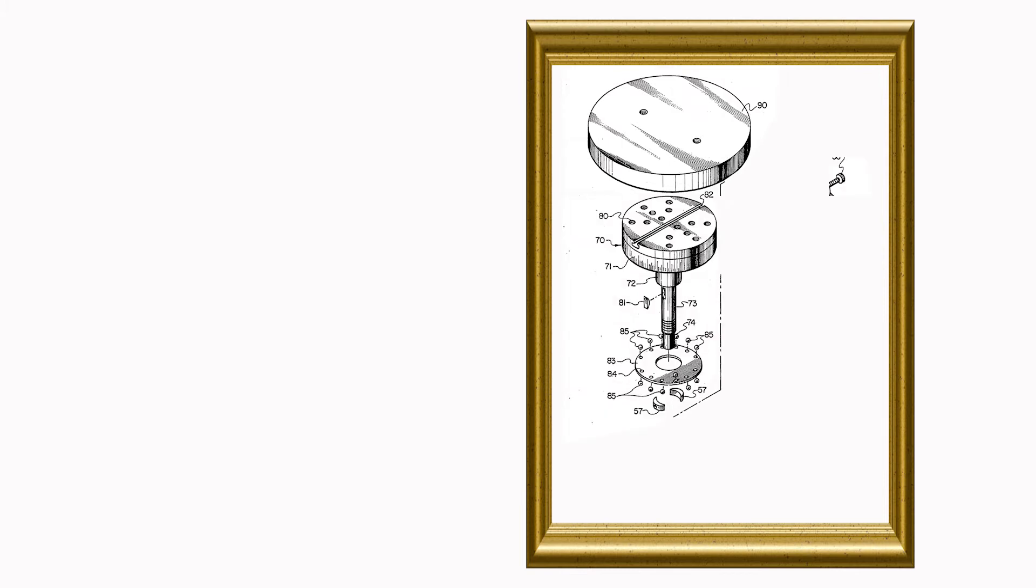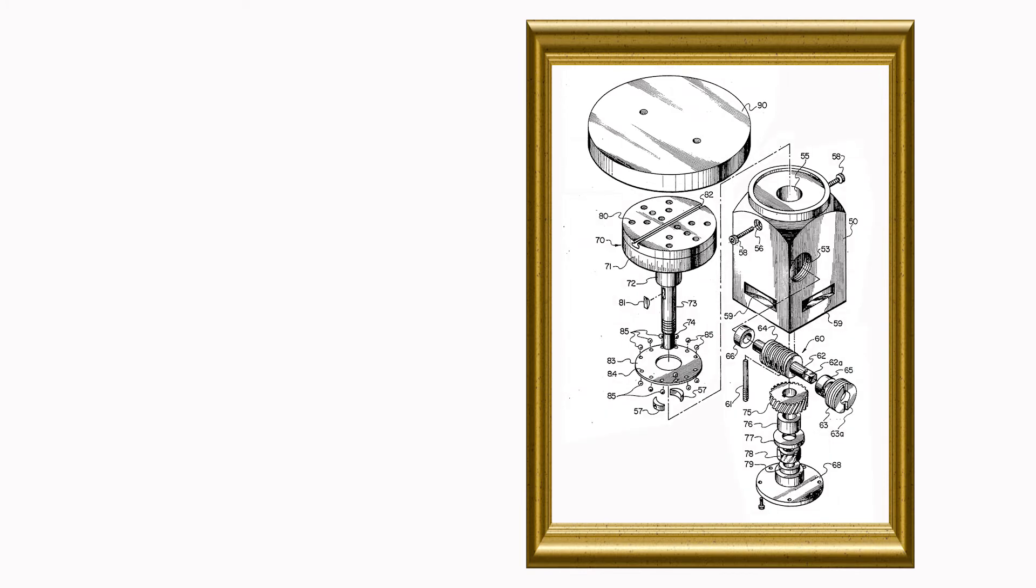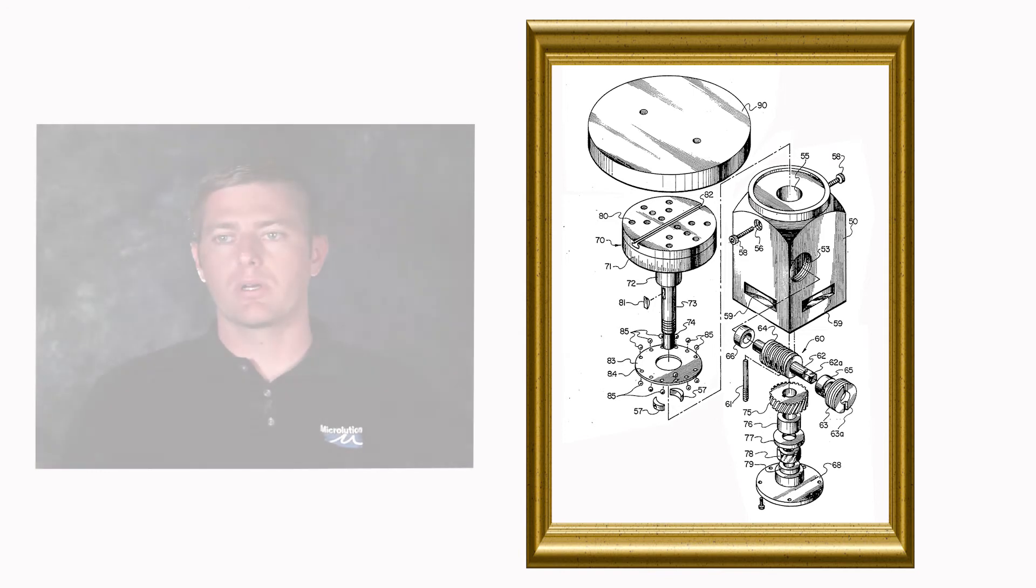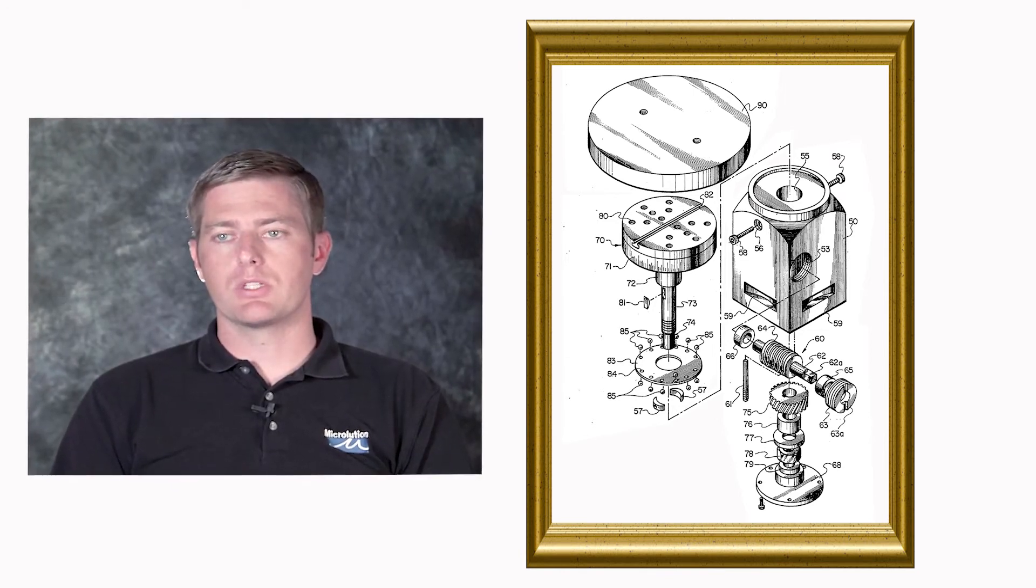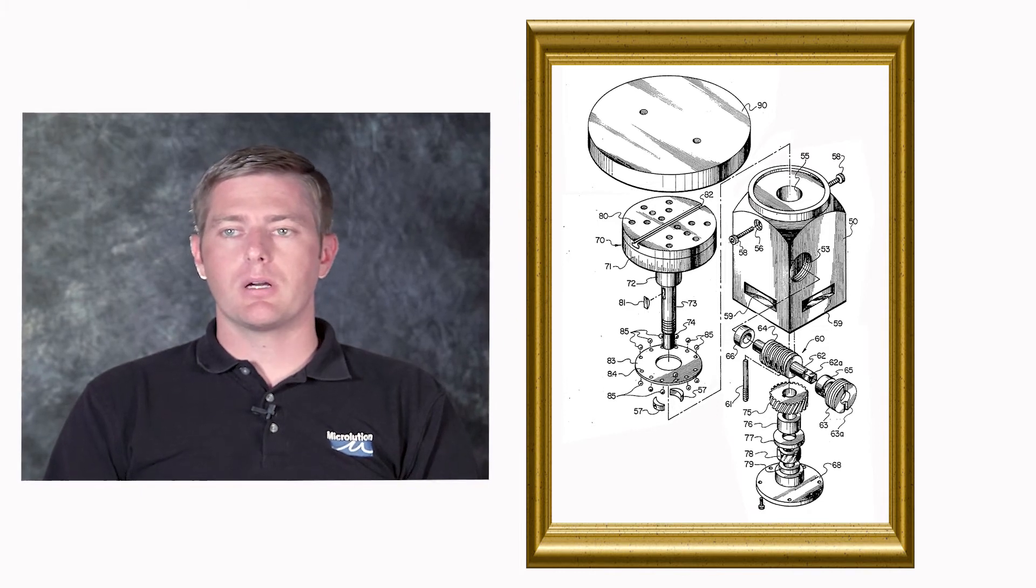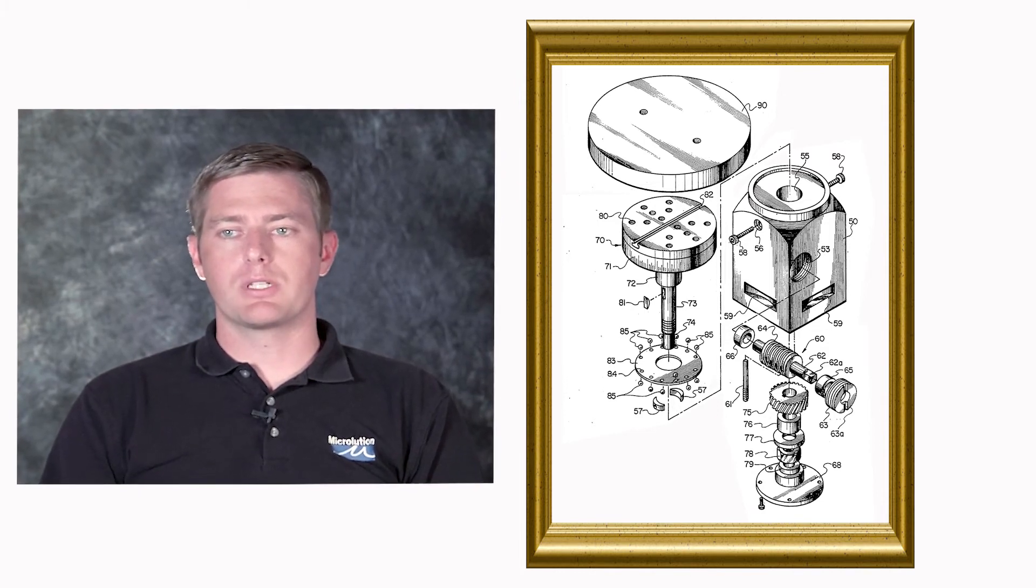One technology for rotary tables is to use a motor to drive some sort of gear, and the problem with that for our use is that the motor is disconnected from the load of the stage, and so any backlash in the gear leads to some level of inaccuracy in the table.